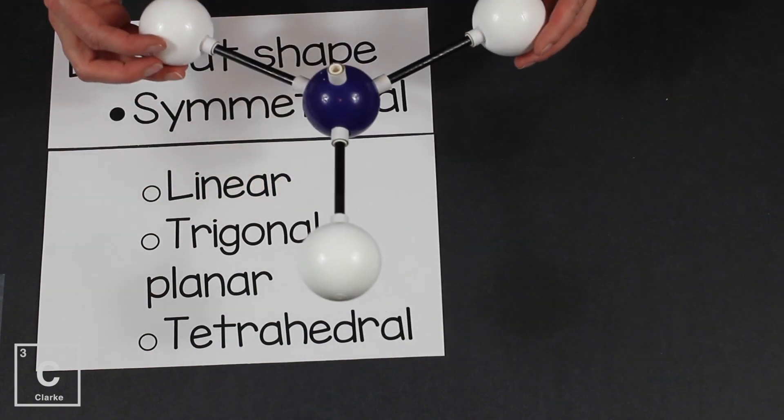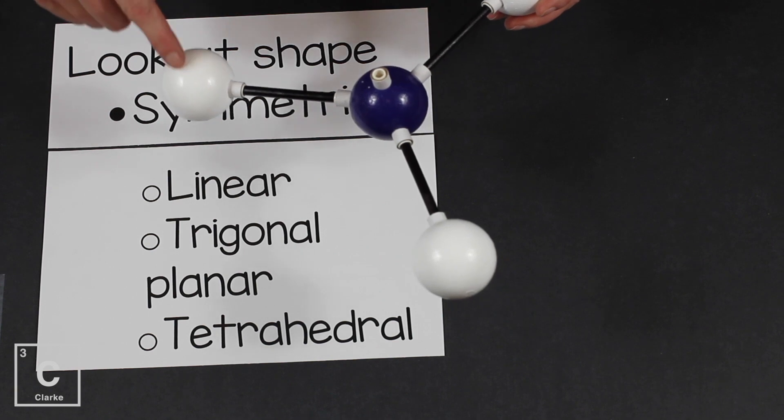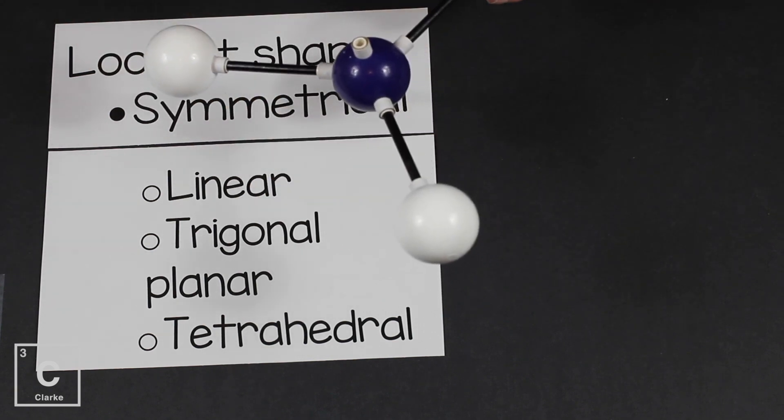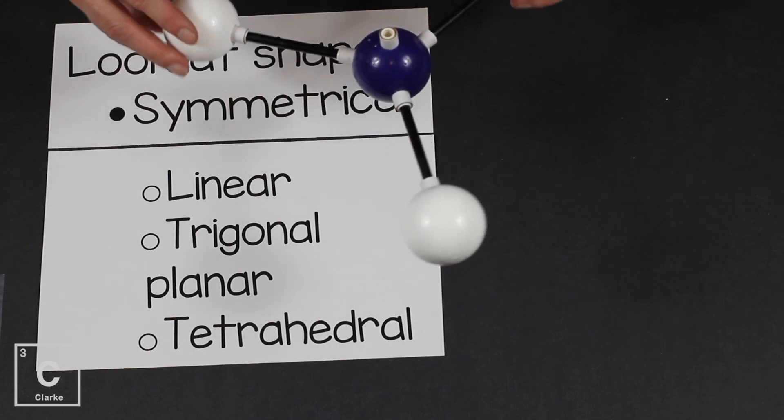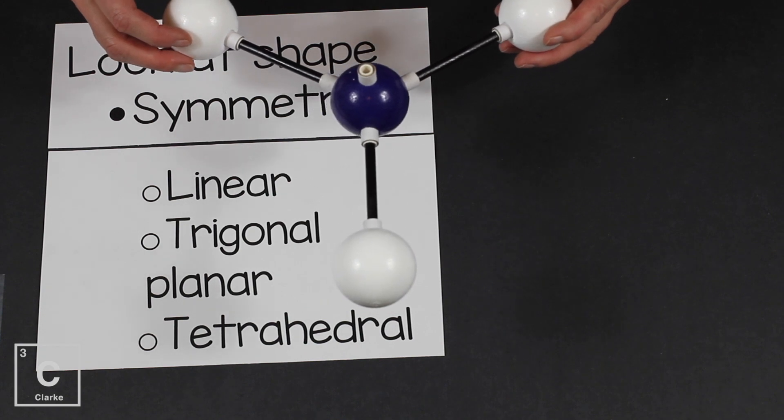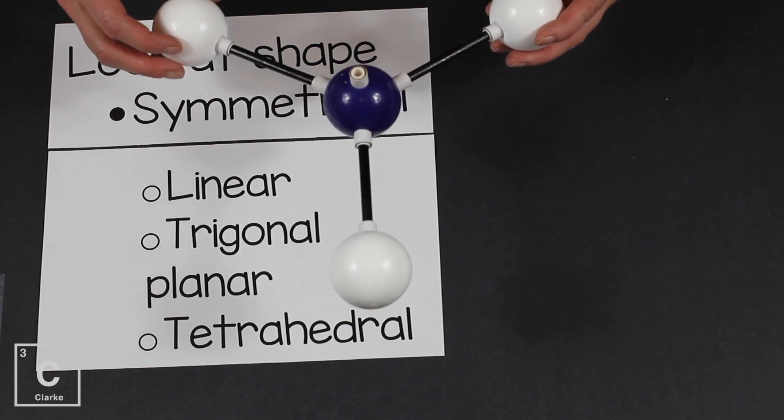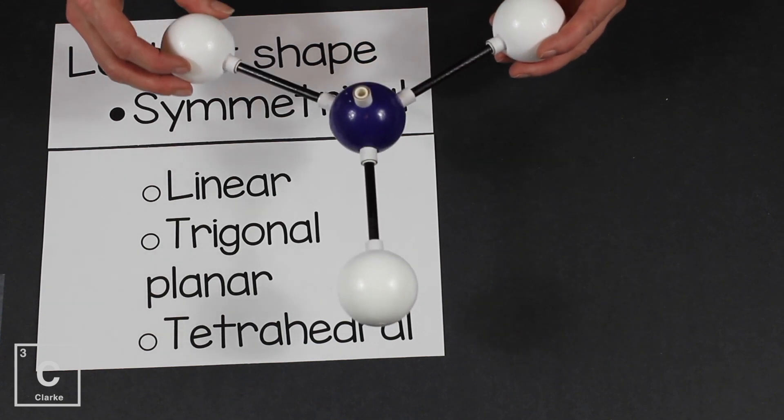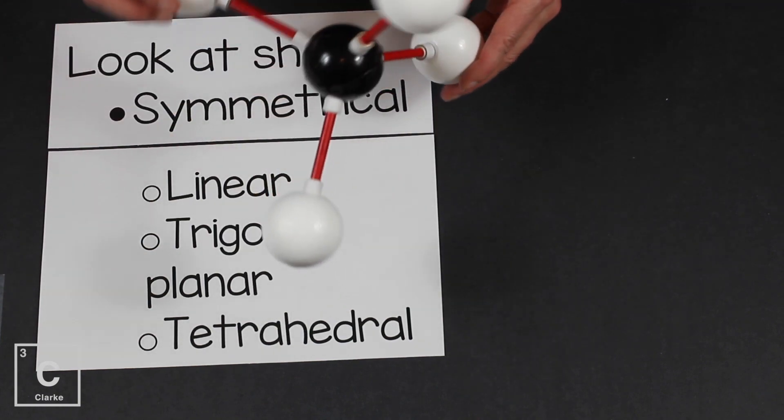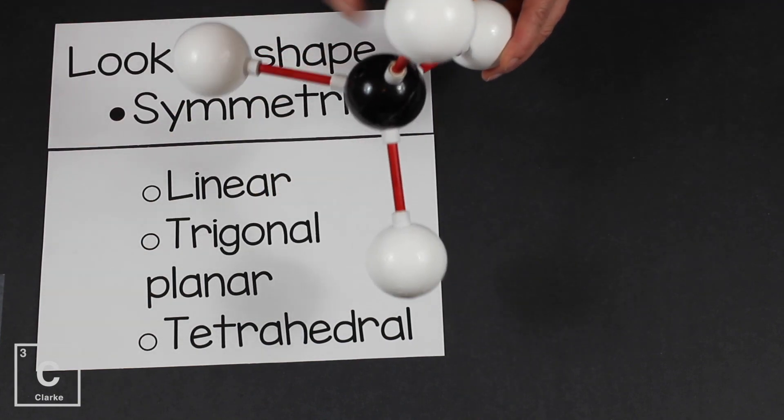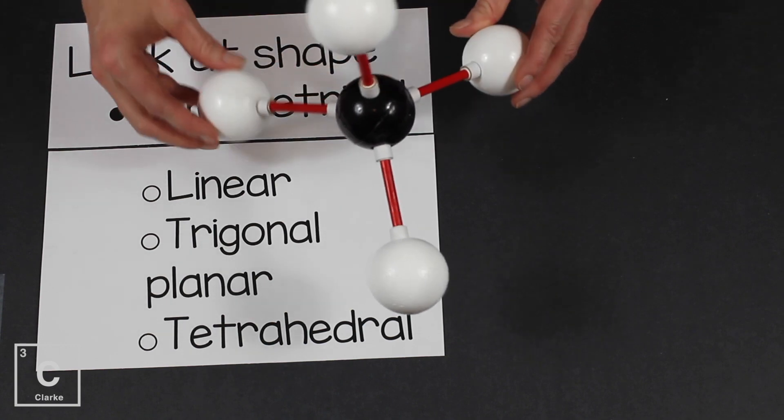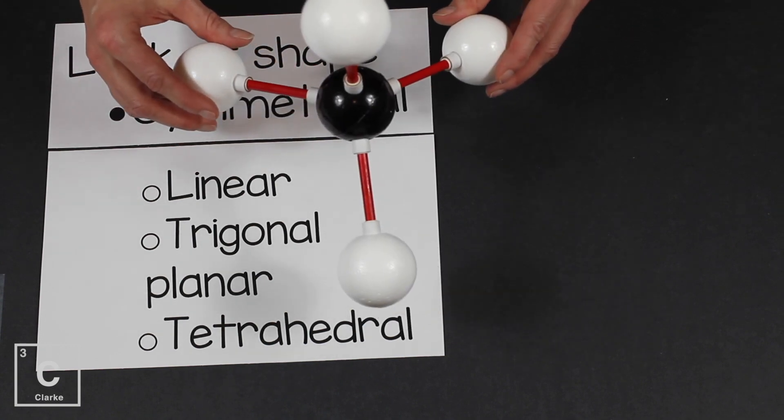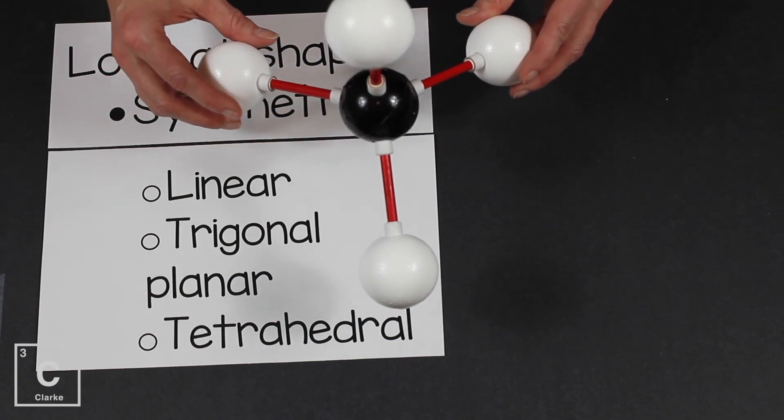Trigonal planar, again, if you have three different people pulling on three different ropes but they're all the exact same strength, no one's going to win tug-of-war, symmetrical. Tetrahedral, again, four ropes, four people with four equal strengths pulling, no one's going to win, symmetrical.